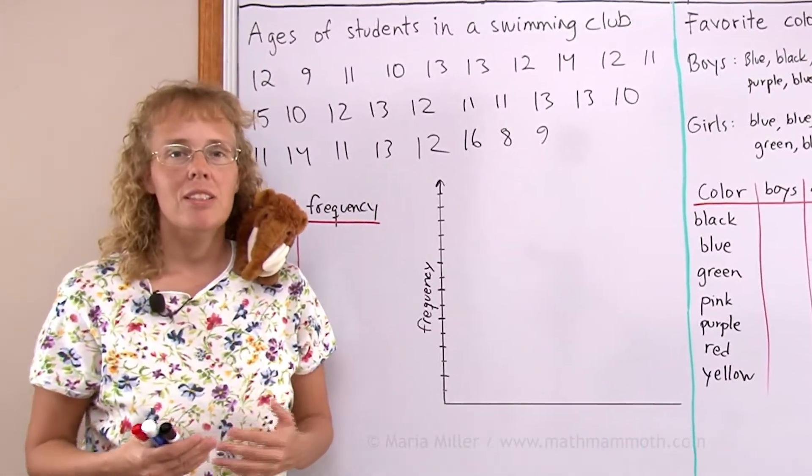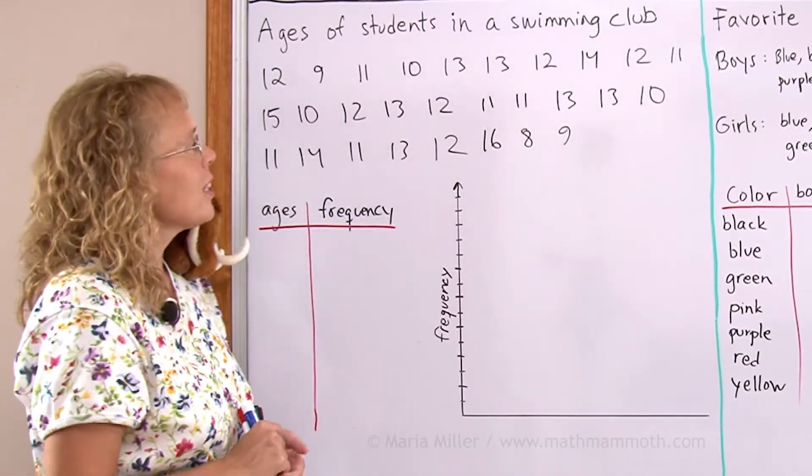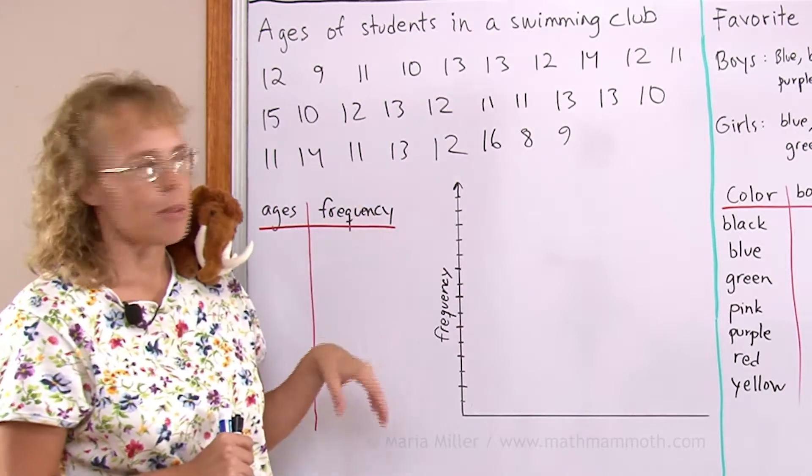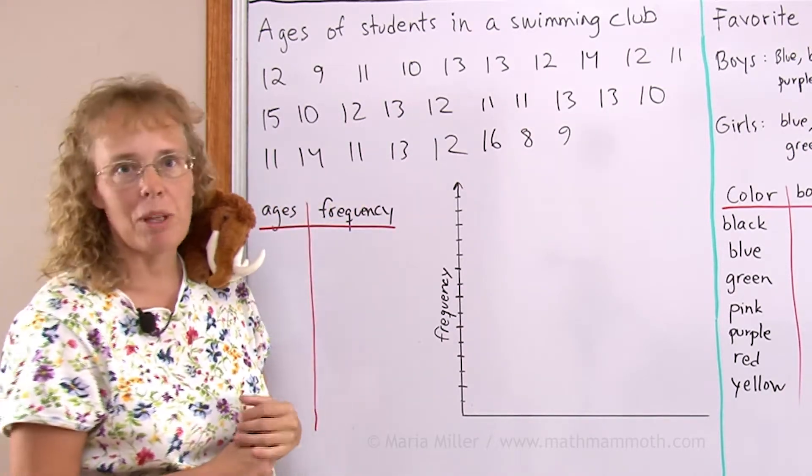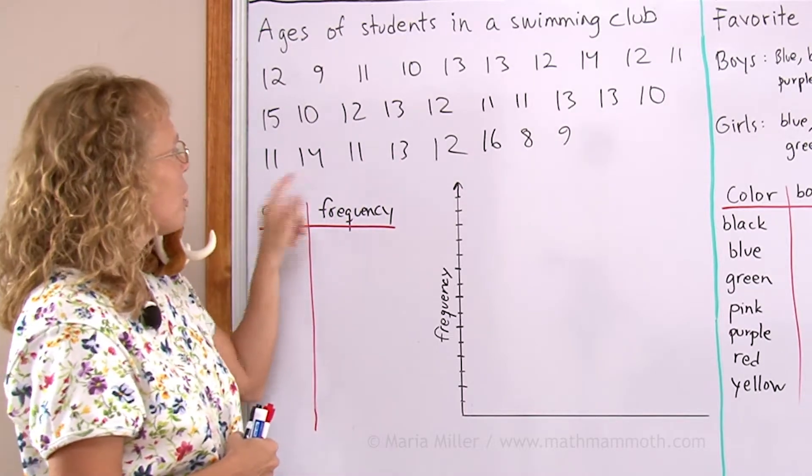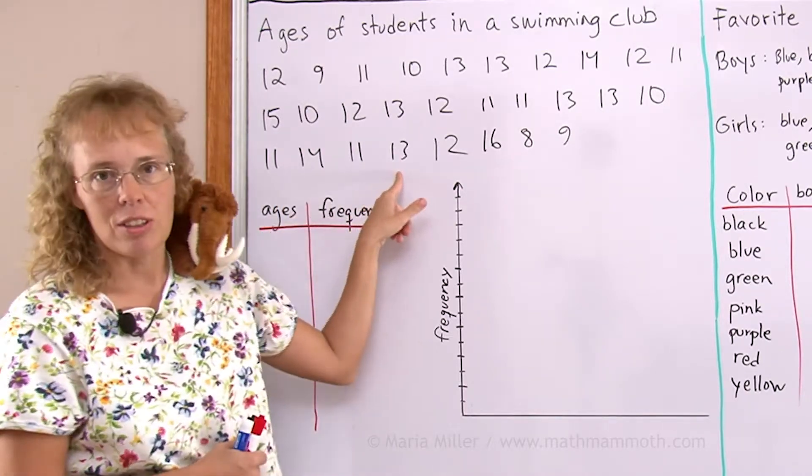Just as a way of comparison, before we even start, take a look at this data that we have. Here we have all kinds of numbers, ages of students in a swimming club. Basically, for each student we have his or her age in years.